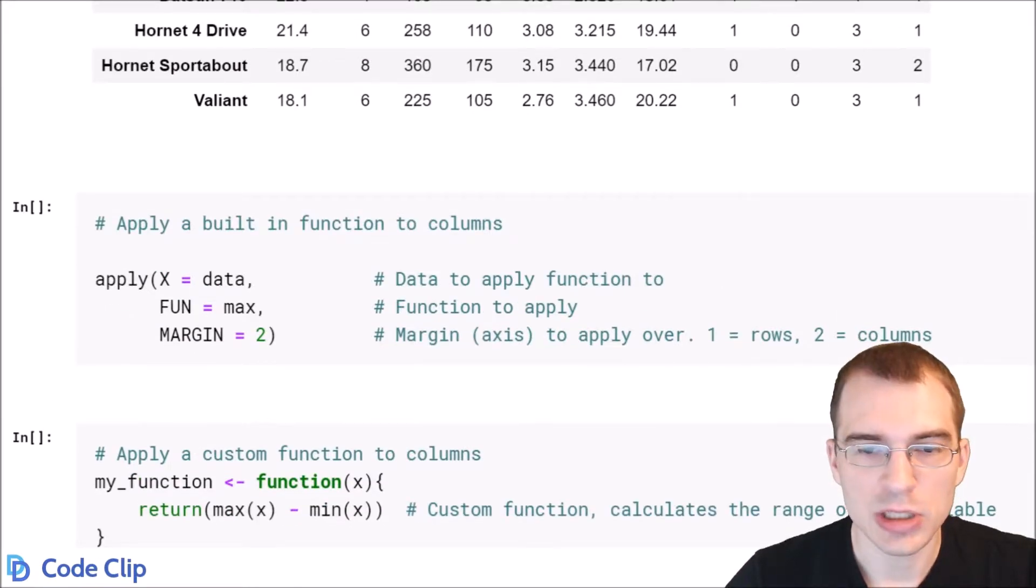Now to apply a function to each column of this data set we're going to use the apply function. For the first argument x, you pass in the data frame you want to apply to. For the second argument fun, you pass in the name of the function to apply.